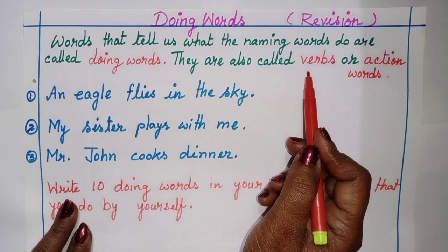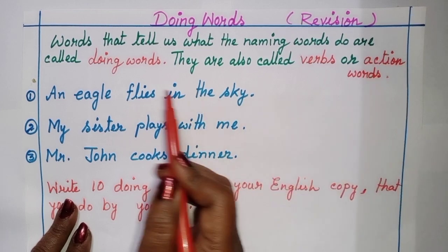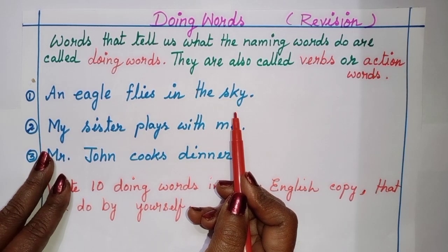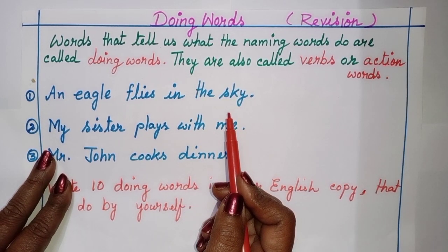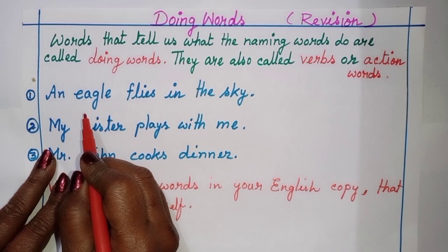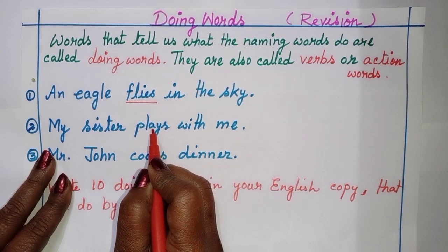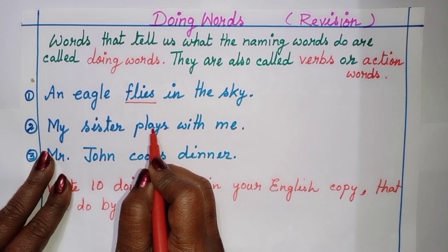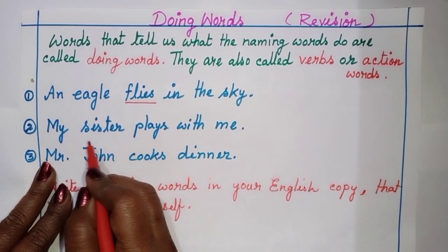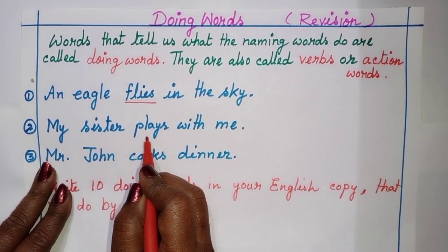Doing words are also called verbs because they are action words. For example: an eagle flies in the sky. Can you guess which is the doing word? The eagle flies — 'flies' is the action word, and we can see it is a doing word, also known as a verb.